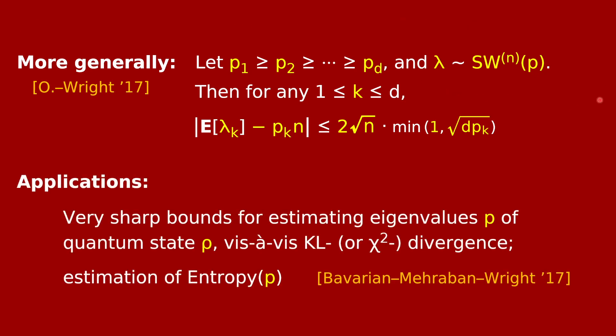Let me just conclude now by mentioning some applications of this statement. For one, you can use it to get very sharp bounds for estimating the eigenvalues p of an unknown quantum state rho, not just with respect to the L1 norm, but with respect to much stricter norms like KL divergence or chi-squared divergence. It was also used by Bavarian, Marabin, and Wright to get a very sample-efficient estimator for the entropy of this probability distribution, which is known as the von Neumann entropy of the unknown quantum state.